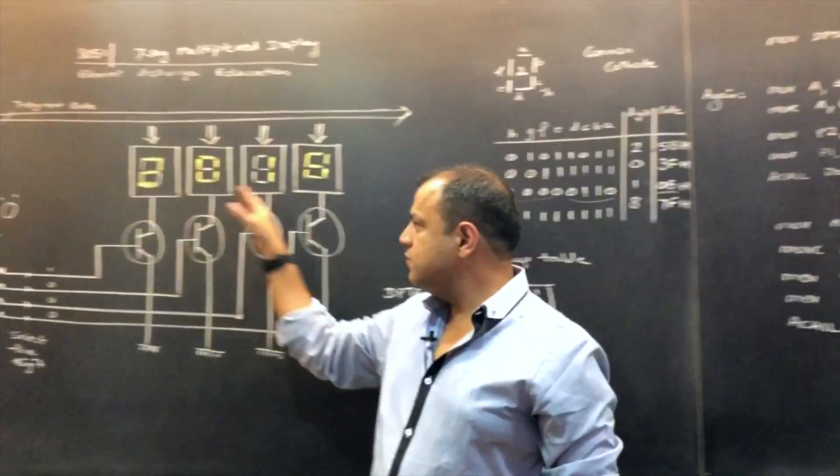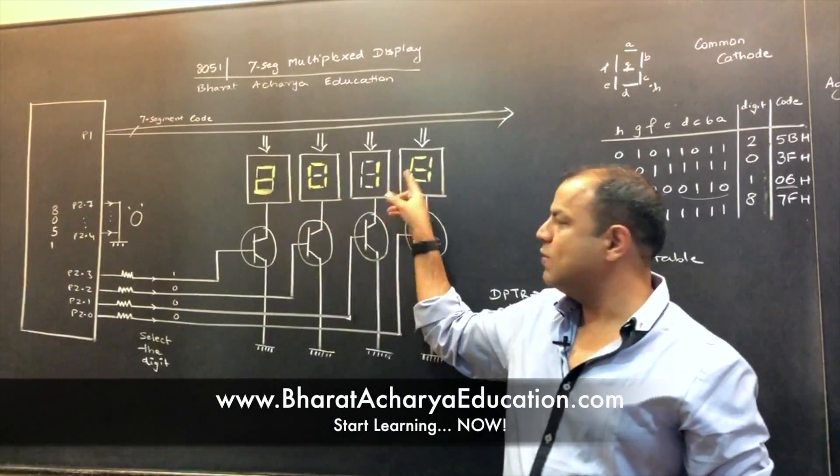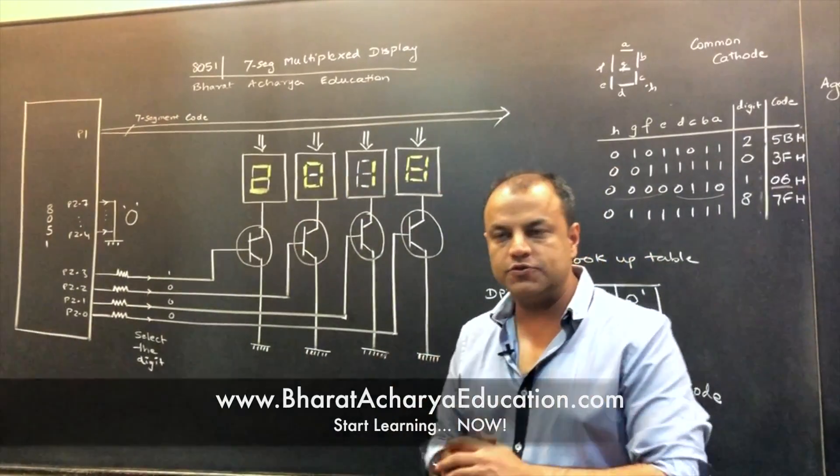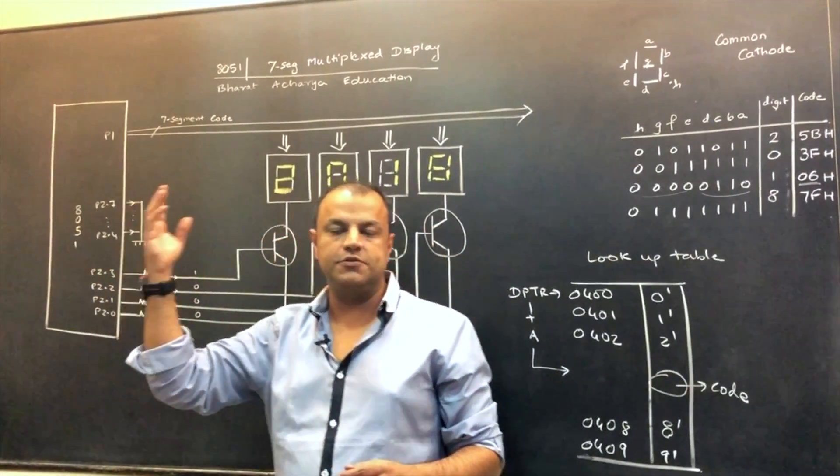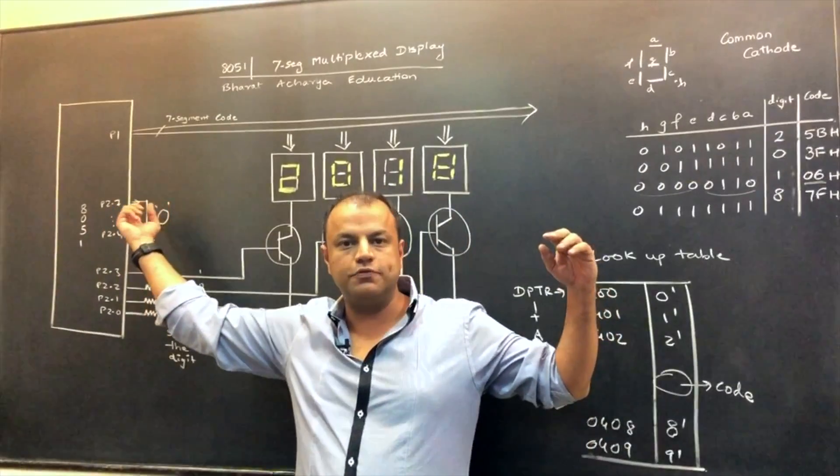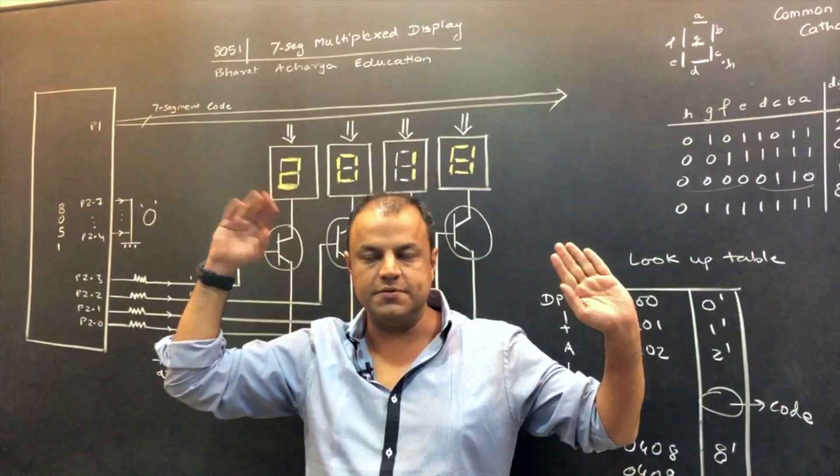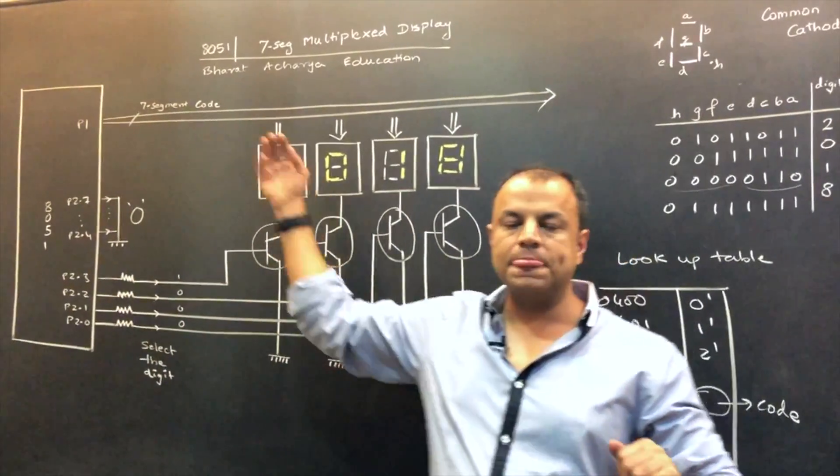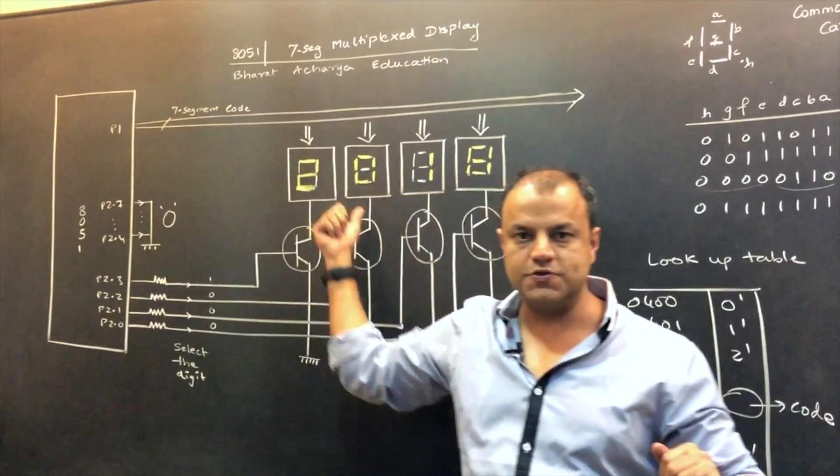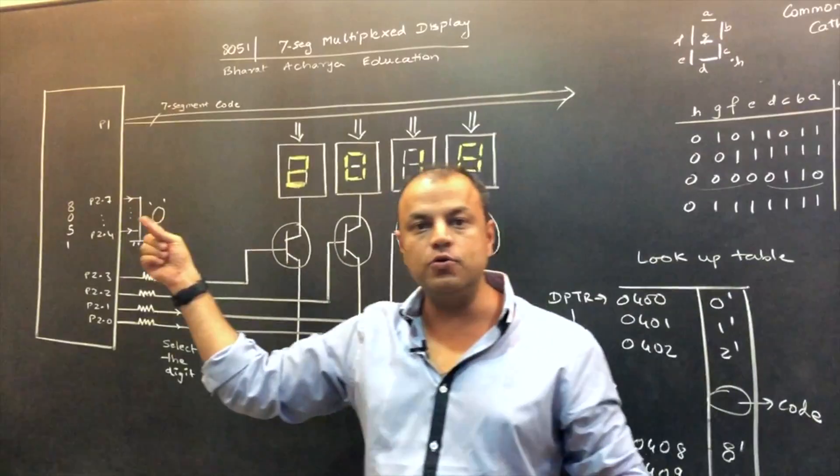So now what happens? When you want to display something over here, let's say you want to display 2018, the current year. What you do is you don't really send all the digits 2018 together. First, you send the code of 2. Now when you do that, you just activate this digit, one digit. So this is the digit selection logic from which you will select this digit. Then you send the code of 0, you select this digit, code of 1 and then code of 8. Back to code of 2.